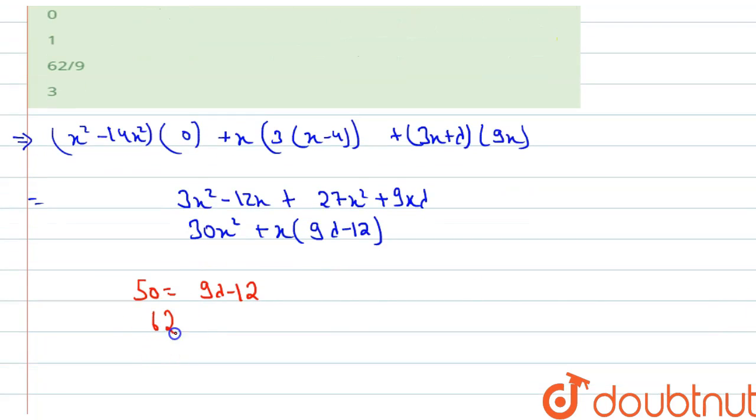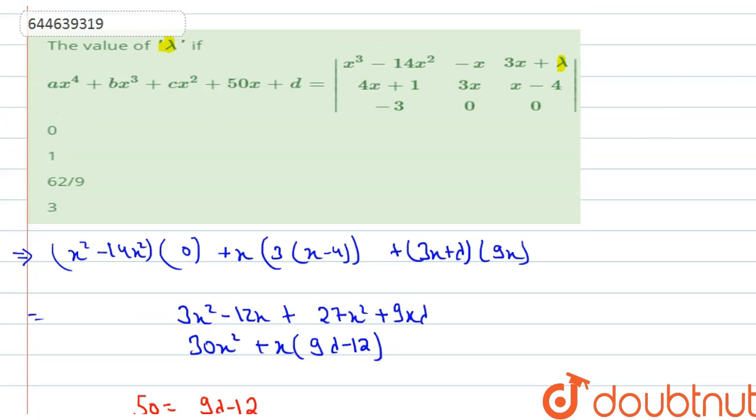So 62 is equals to 9 lambda and lambda is equals to 62 by 9. We got the value of lambda which is 62 by 9 and the correct option is option C. This is the correct answer. Thank you watching. Best of luck. Bye bye.